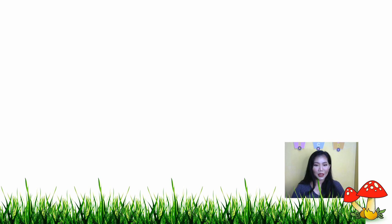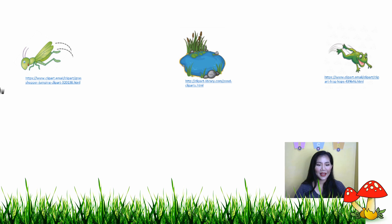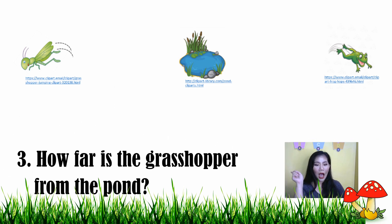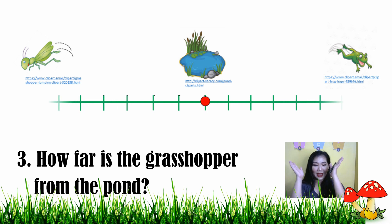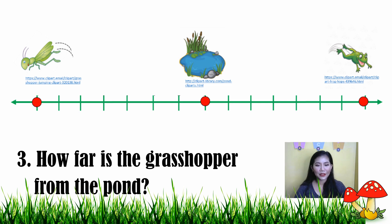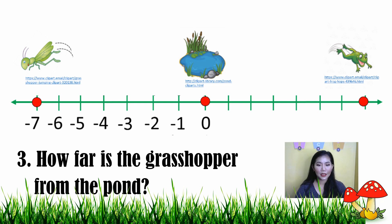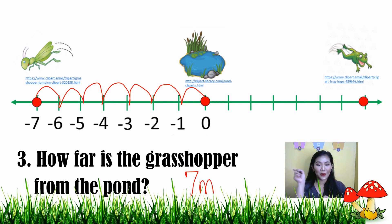Question number three: how far is the grasshopper from the pond? To answer that we need the number line. From the pond, which is our zero, the grasshopper hops one, two, three, four, five, six, seven — so the grasshopper hops seven meters to the west.